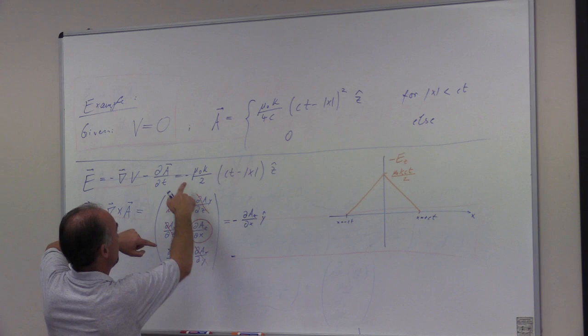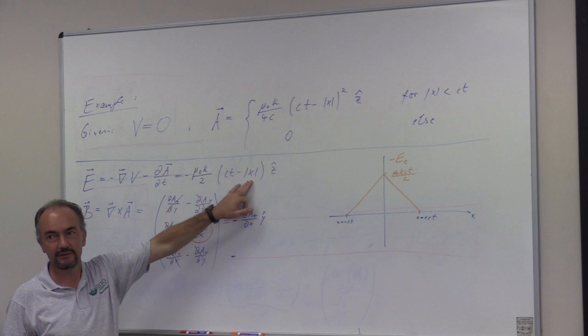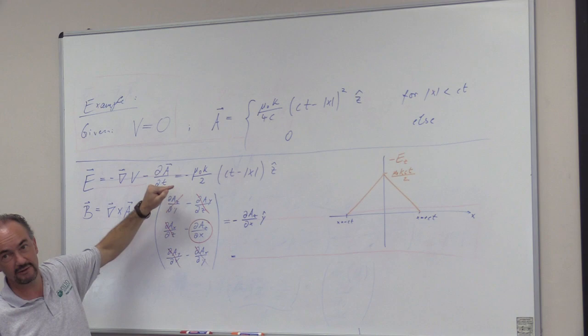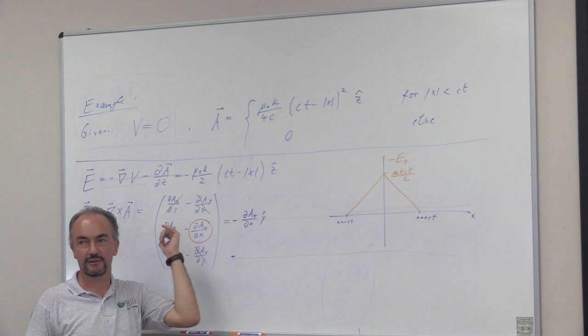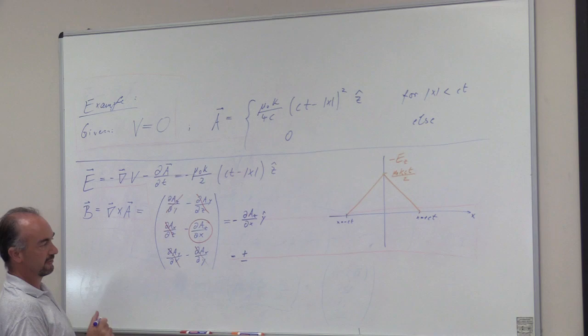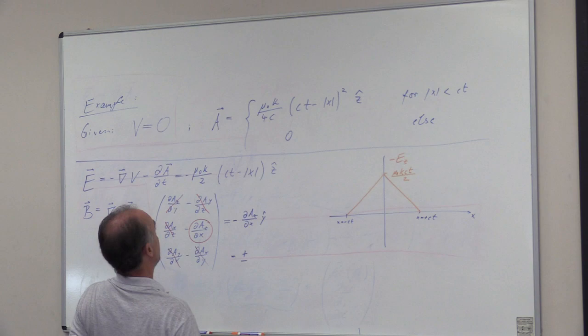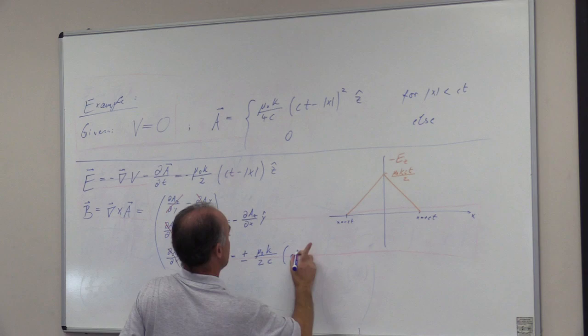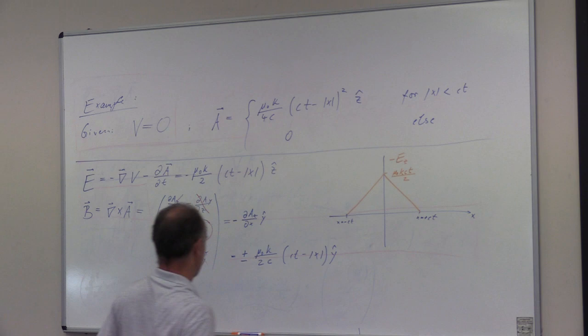So this is minus, minus, and here, now we have a real thing with this absolute value. If we are at x negative, then this is effectively ct plus x. So this is actually depending on whether x is positive or negative, the value here is positive or negative. And here you get mu naught k over 2c in the y-direction.